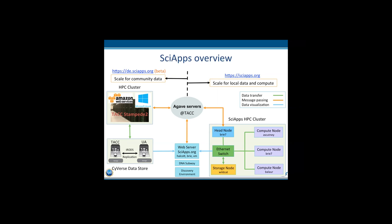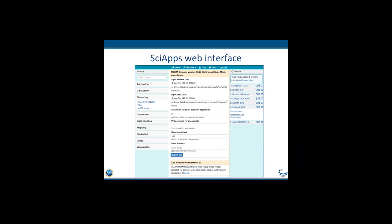de.SciApps.org is the better version and is pretty stable now. We have several workflows running on that which we can share with you. This is the SciApps web interface. In the center, I loaded an app called MLM for multi-locus mixed model association — it's one of the modeling tools for GWAS. On the right side is the GWAS workflow; on the left side are the apps. The three panels look similar to Galaxy, but the main advantage is you don't need to install your own Galaxy — all the workflow tools are ready to use.